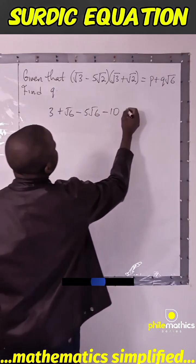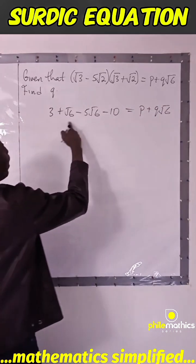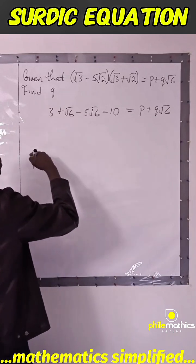And this should be p plus q√6. And if I subtract this and this, 3 minus 10 is minus 7.